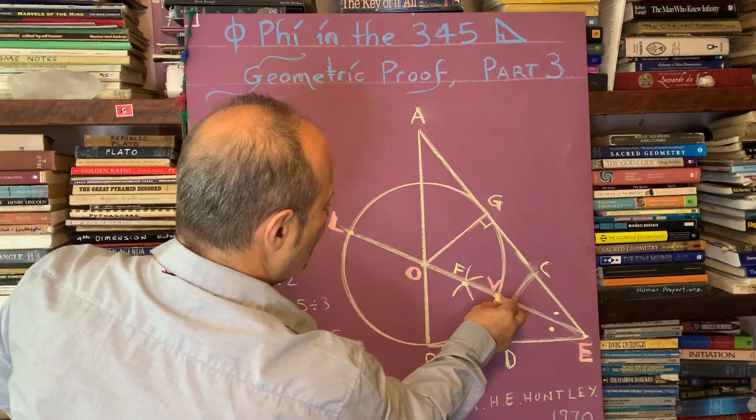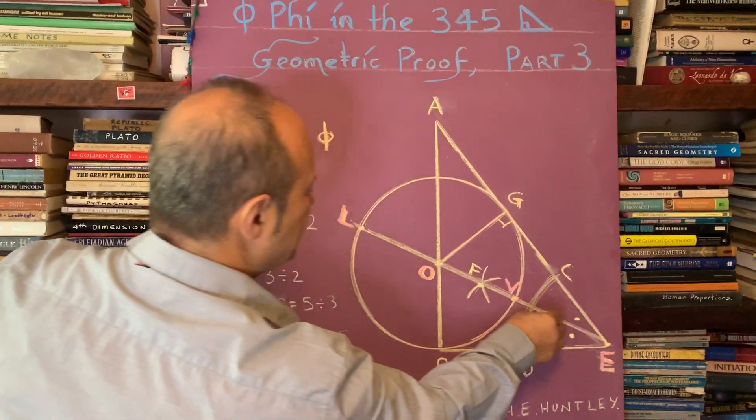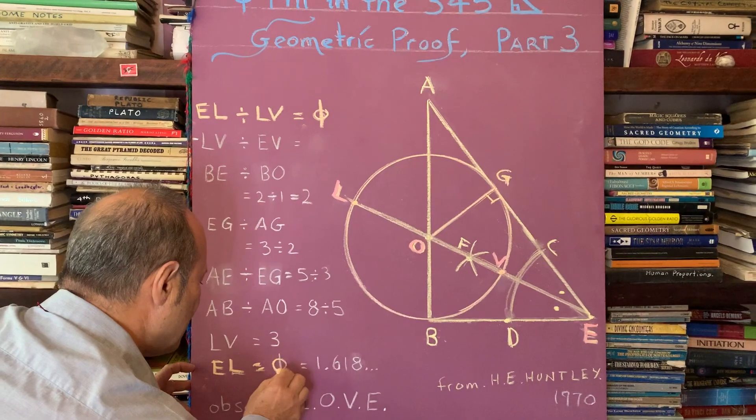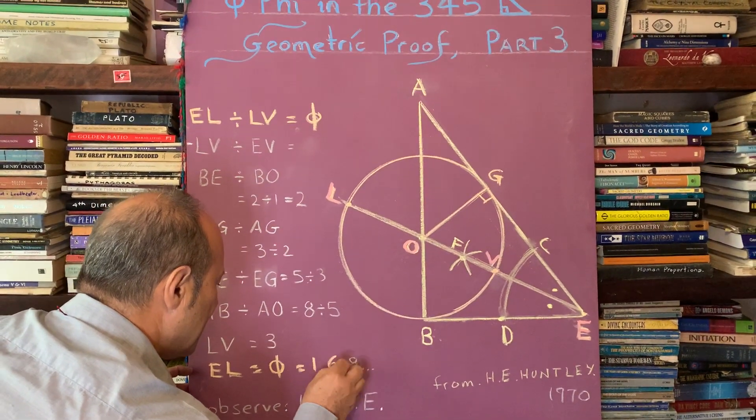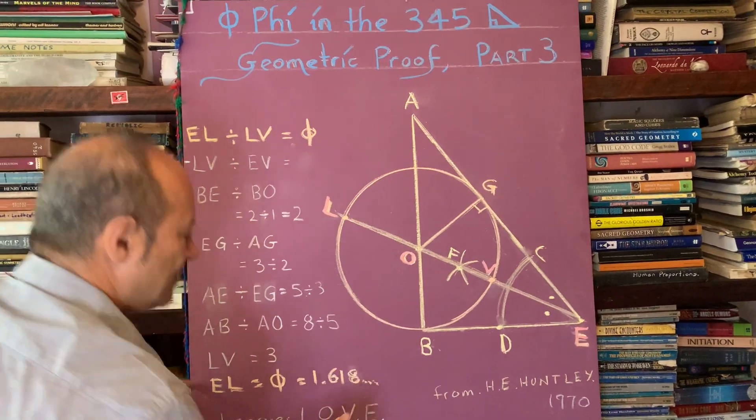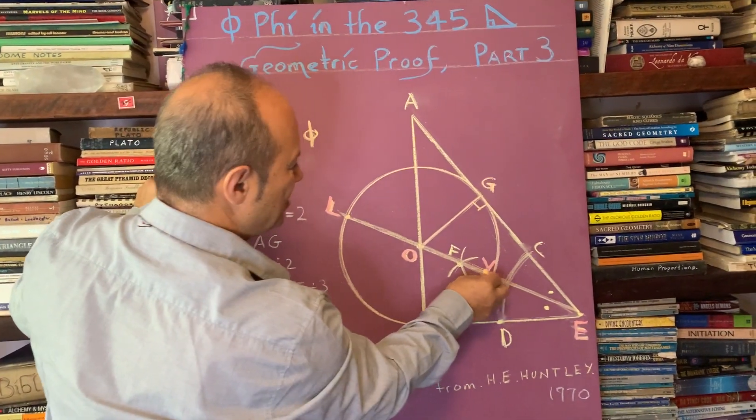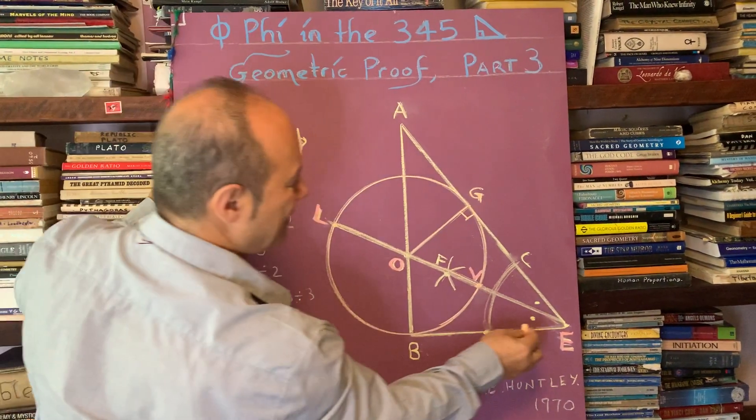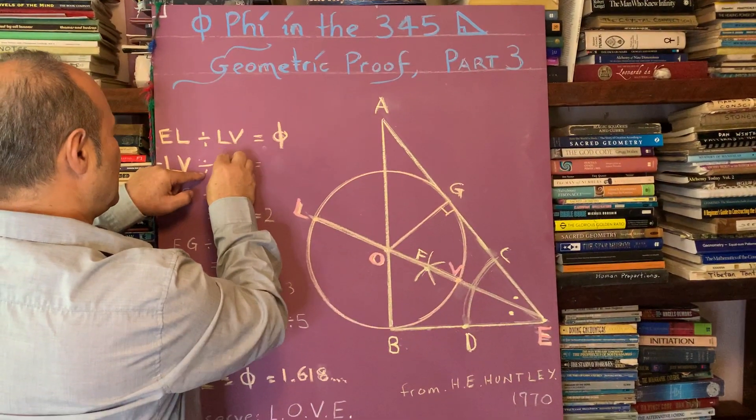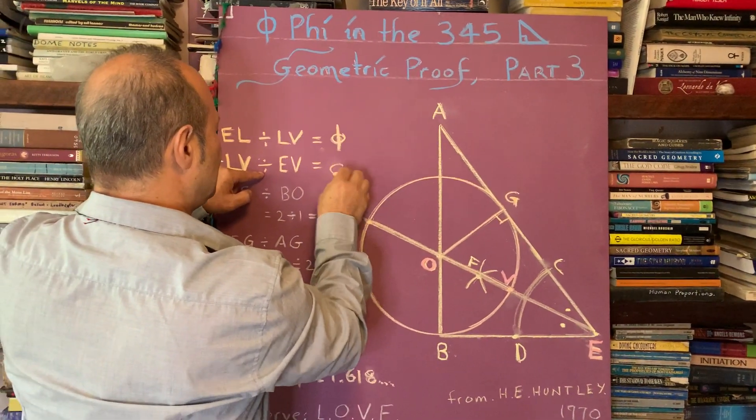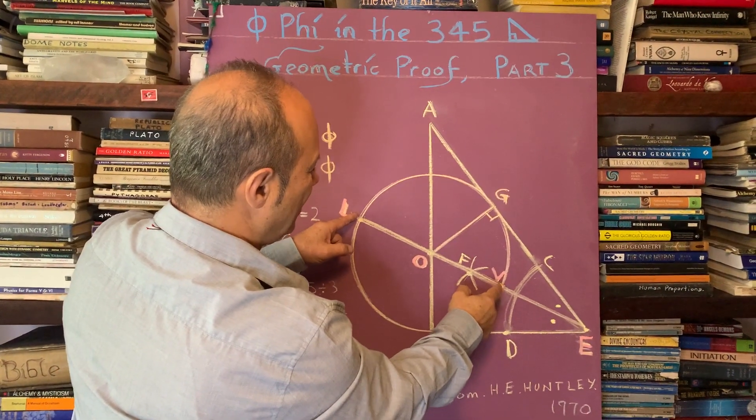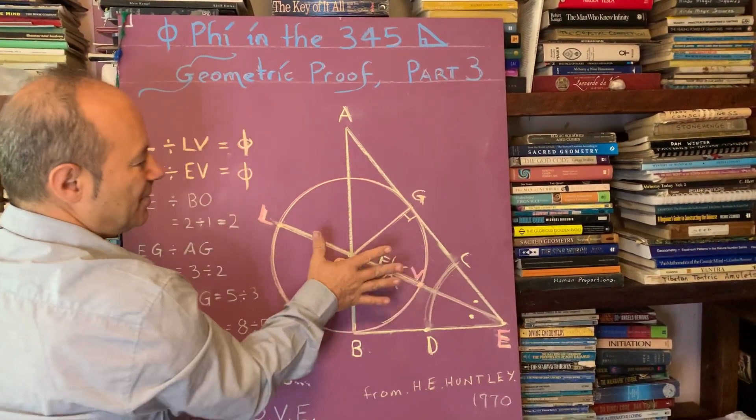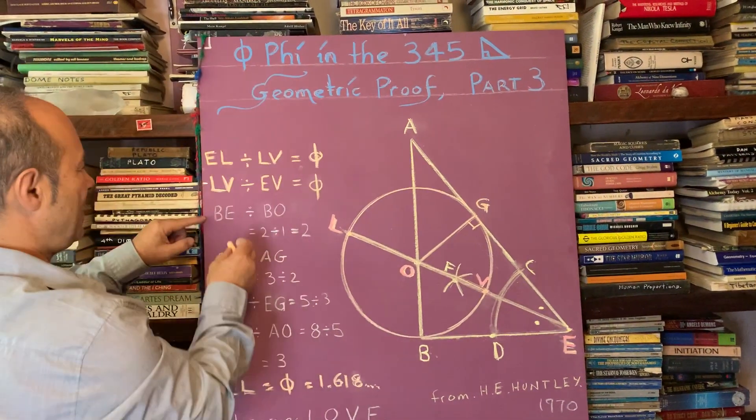In fact, E-L, the whole distance E-L as a measurement, equals 1.618. The next one is L-V, the diameter of the circle L-V divided by the shorter segment E-V equals phi as well. That means if this was like a pine cone, if this was 13 and the shorter distance was 8, in Fibonacci numbers, the ratio of 8 to 13 is 1.618 as an approximation.